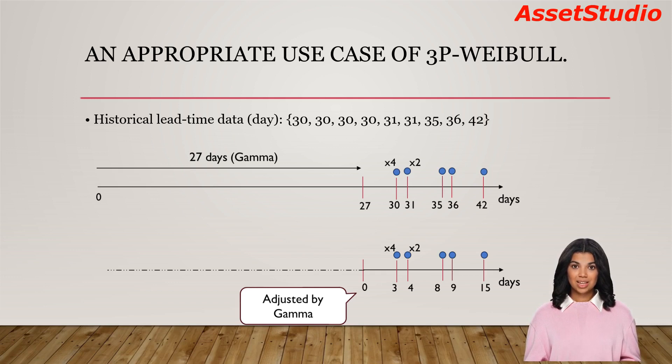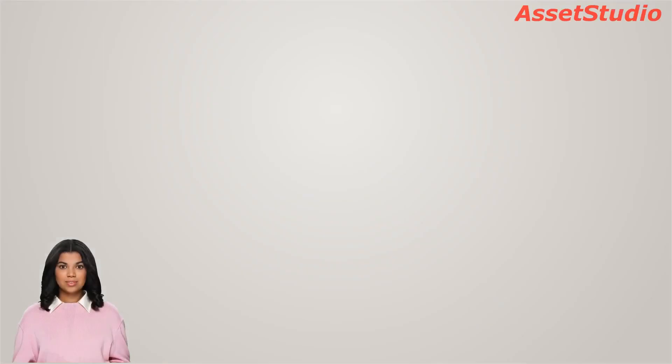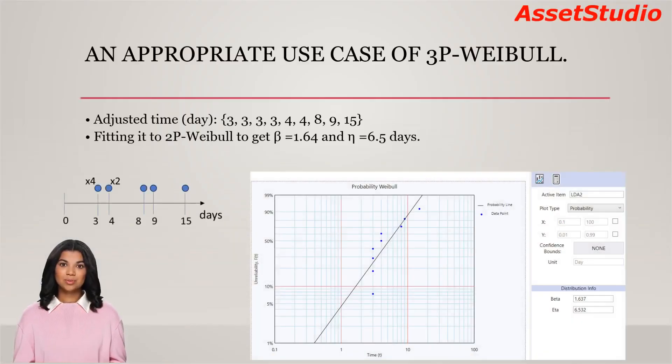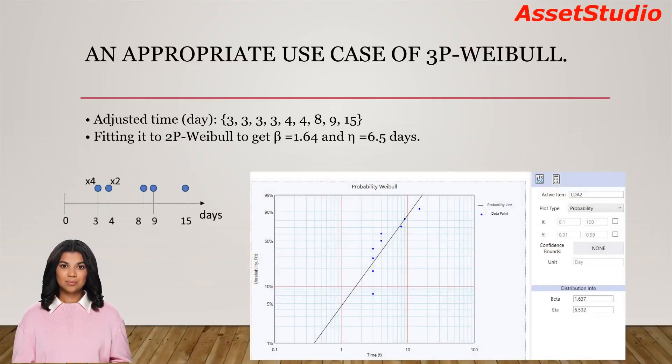You can set the gamma equal to 27 days, and here is the adjusted dataset. Fitting it to 2-parameter Weibull, we get beta equal to 1.64 and eta equal to 6.5 days. The distribution can be described using a 3-parameter Weibull with beta equal to 1.64, eta equal to 6.5 days, and gamma equal to 27 days.